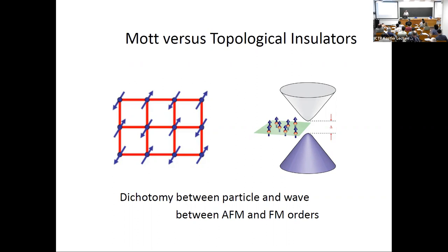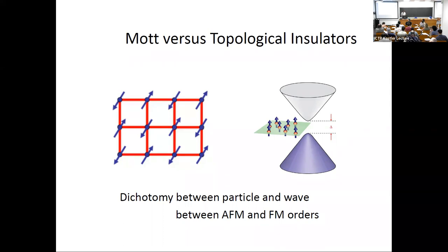In the Mott insulator there's no global breaking of time-reversal symmetry — if you perform time-reversal followed by a translation the state is restored. In the quantum anomalous Hall state the chirality of the edge states requires a global breaking of time-reversal symmetry. In magnetically doped topological insulators the system is ferromagnetically ordered, and the sign of the magnetization determines the sign of the Hall conductance, plus or minus e²/h.